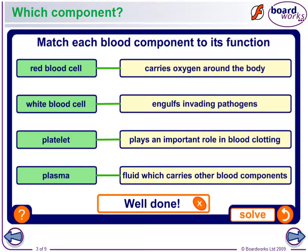White blood cells engulf invading pathogens — they are your body's defense against disease. Platelets play an important role in blood clotting. And plasma is actually the fluid that carries the other components.